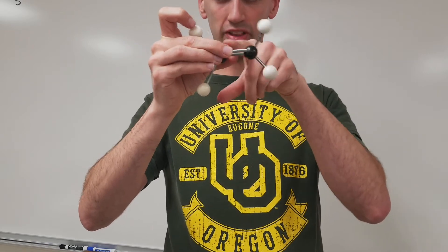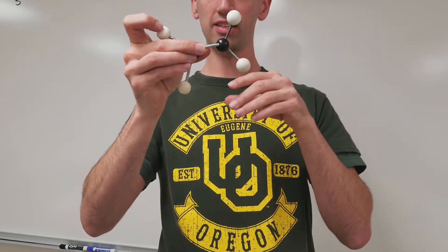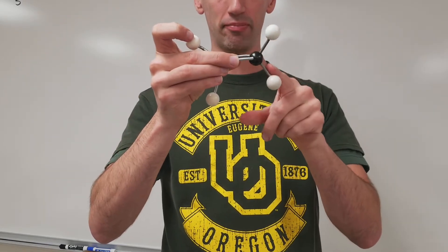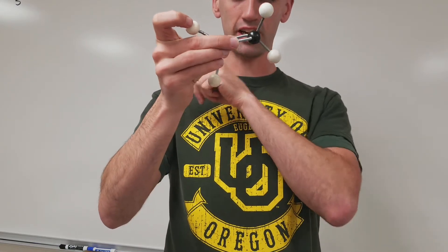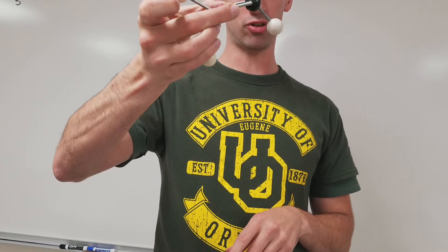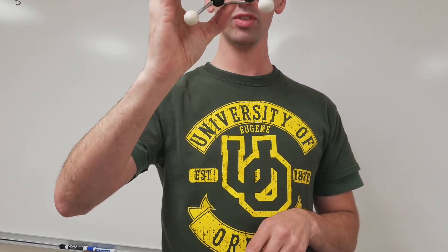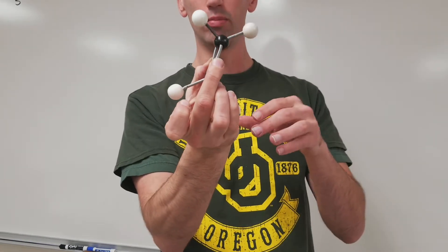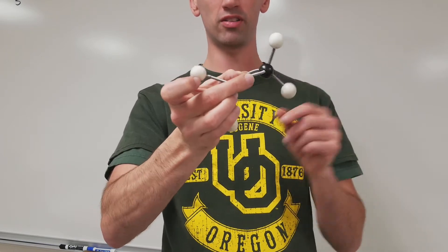So a double bond, that's one thing, two things, three things. Three things attached, three domains. Three sets of electrons attached. We're going to say this is trigonal planar electron geometry with three things attached. Molecular geometry is also trigonal planar. There's no lone pairs.